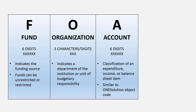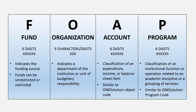The A part stands for account code — six digits, a classification of an expenditure, income, or balance sheet item. This code is similar to the object code in One Solution. The P part stands for program code — six digits, a classification of an institutional function or operation related to an academic discipline or grouping of services. This code is similar to the program code in One Solution.